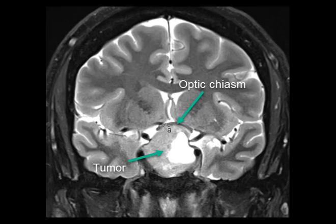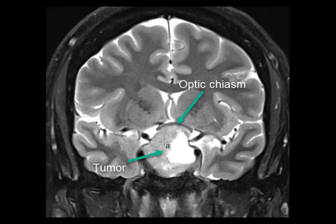See how the optic nerve and optic chiasm is draped over the tumor. Oftentimes also, the anterior cerebral artery will pulsate against the nerve on the other side, and the nerve gets pinned between the tumor and a traversing artery, and it leads to loss of vision, in particular peripheral vision.